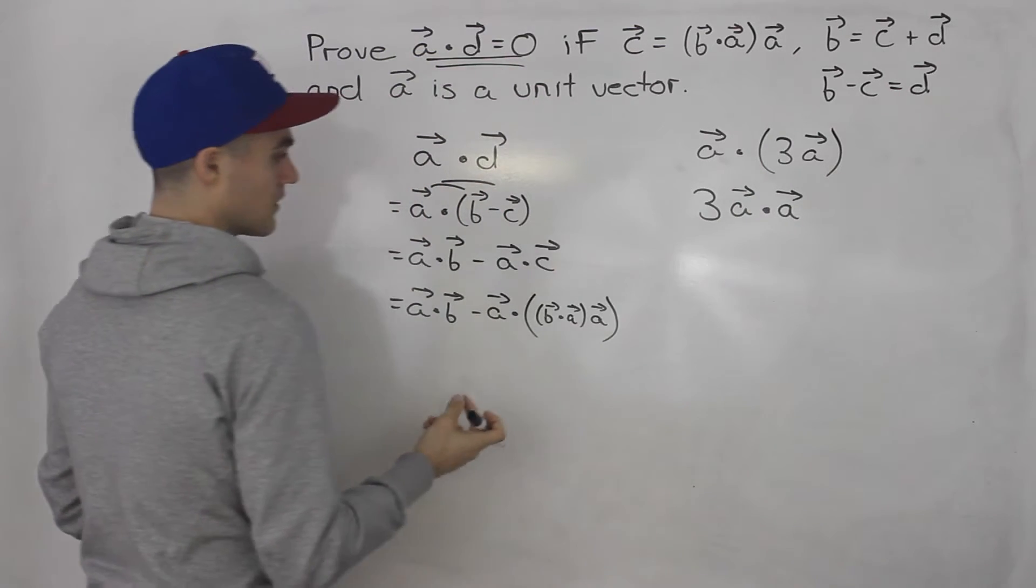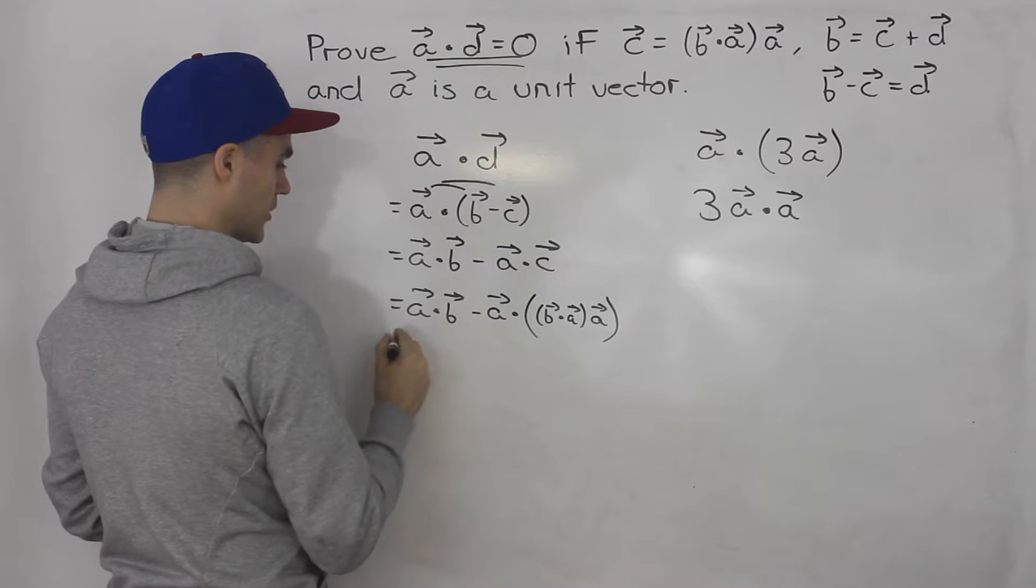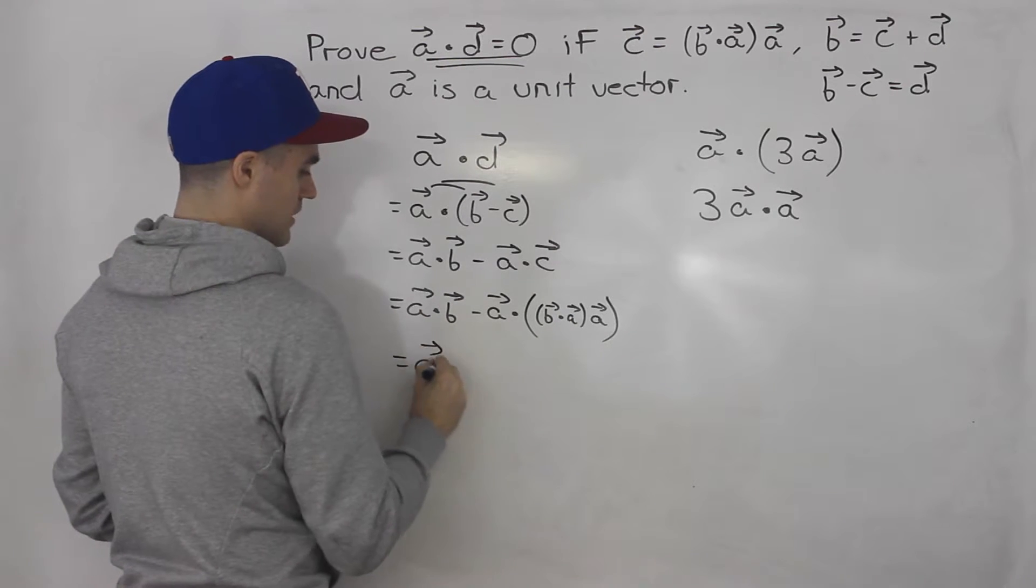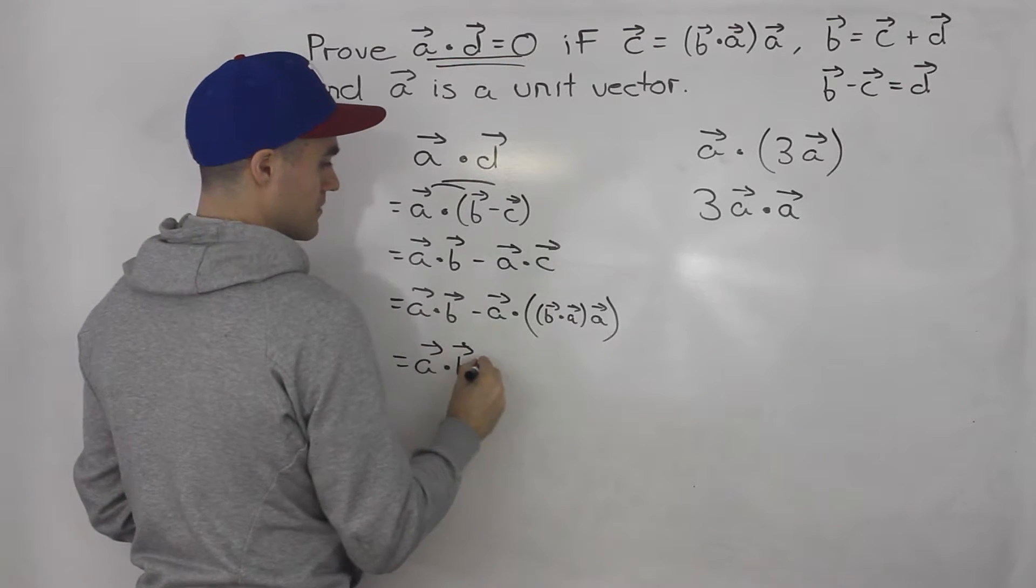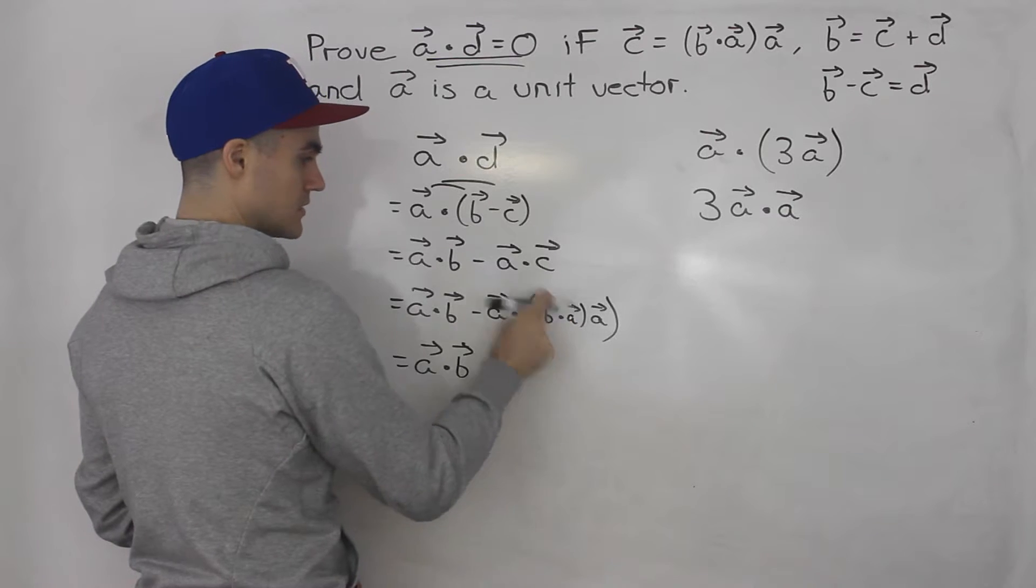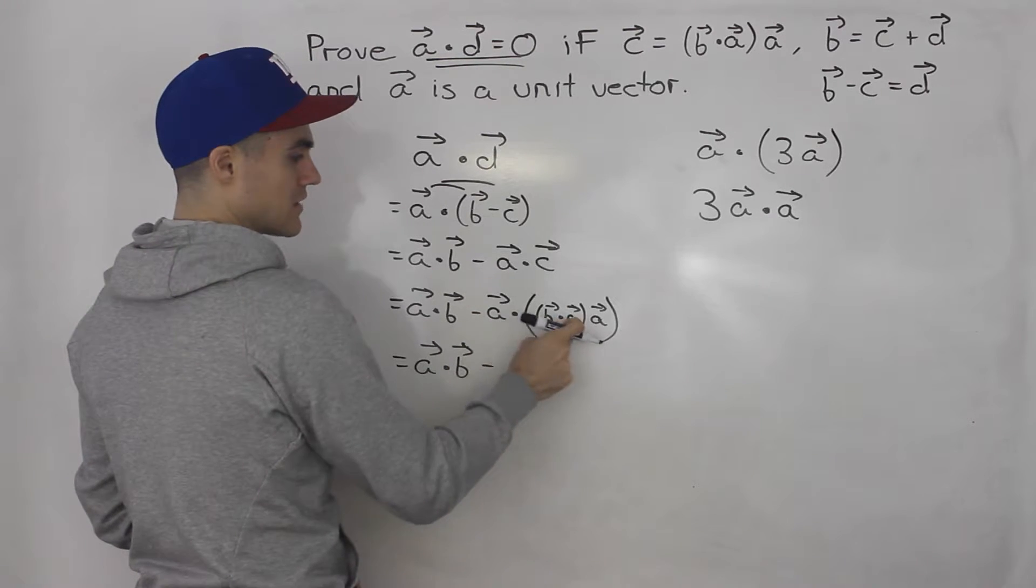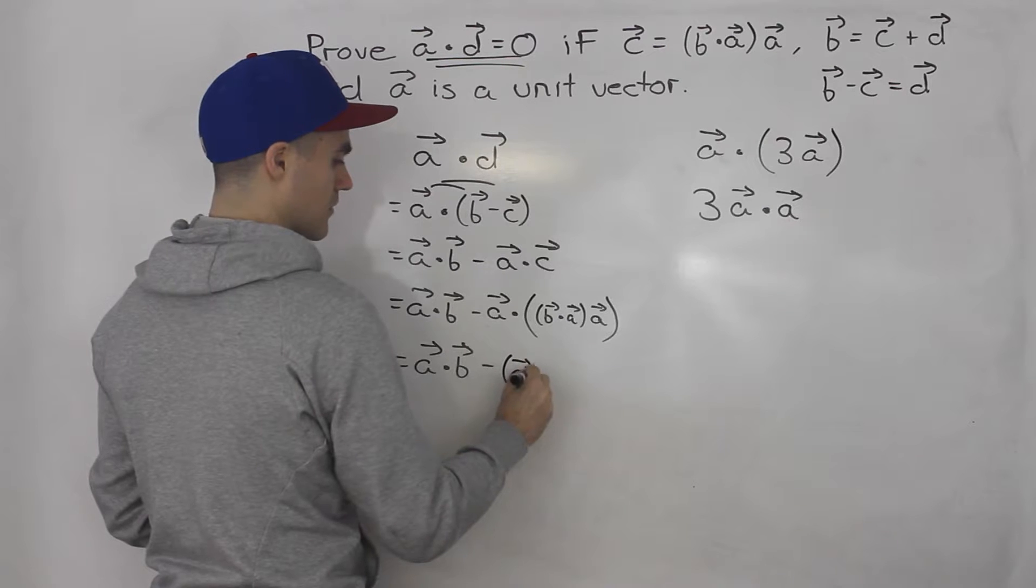So same thing here, I'm going to take this scalar, and I'm going to put it in front. So I got a dot b minus, I'm going to put this scalar in front, instead of writing b dot a, I'm just going to write a dot b, it's the same thing.